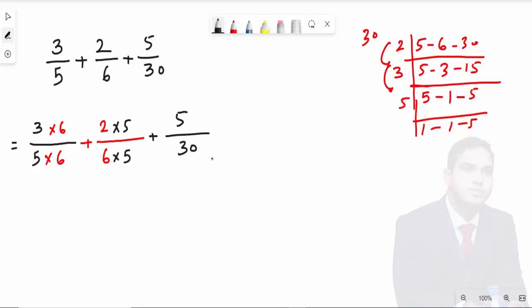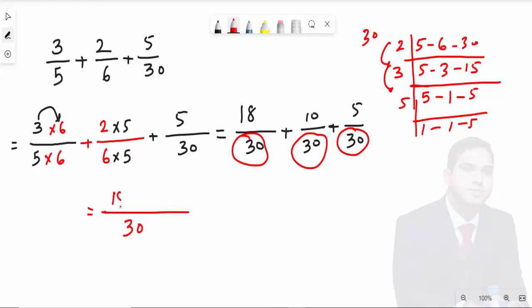Now, 3 times 6 is 18 over 30, plus 2 times 5 is 10 over 30, plus 5 over 30. You can see that the denominators are the same now. You can just add the numbers: 18 plus 10 plus 5. So what will be the answer? 33 over 30.